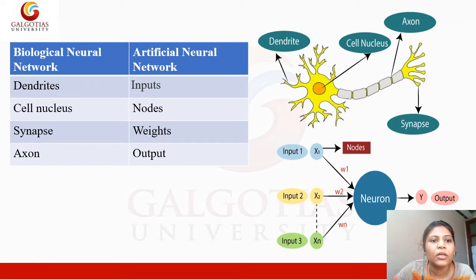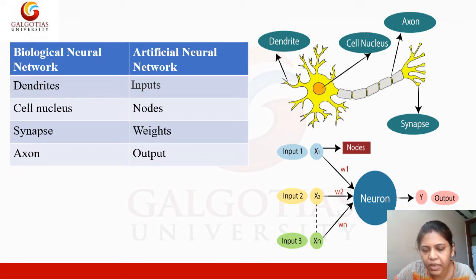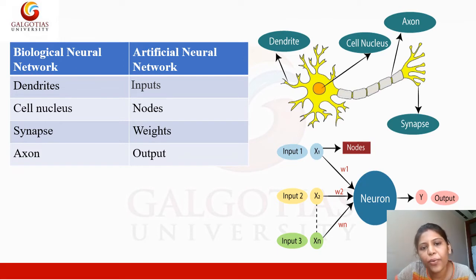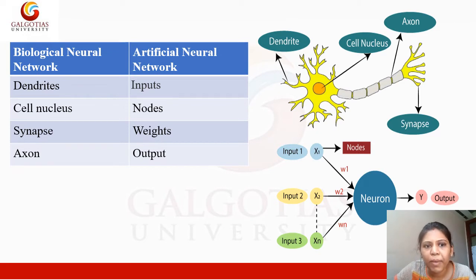This diagram shows the difference between biological neural network and artificial neural network. The above diagram shows a biological neural network, and here is the artificial neural network architecture. In biological neural network, dendrites are represented as inputs in ANN. The cell nucleus is denoted as nodes in ANN. Synapses are denoted as weights in ANN, and the axon is represented as the output in ANN.